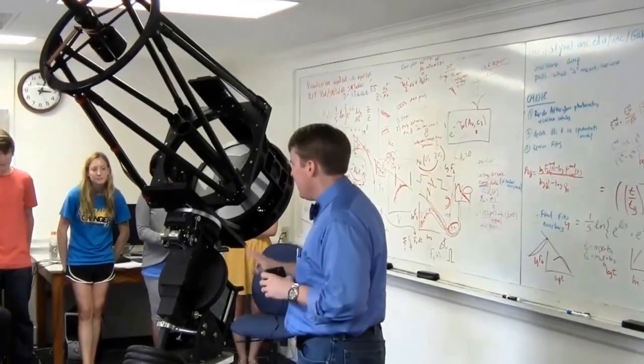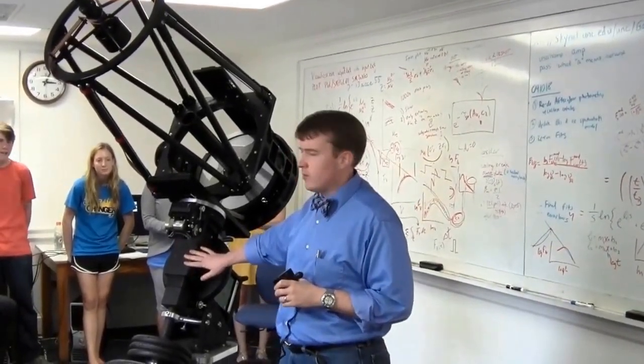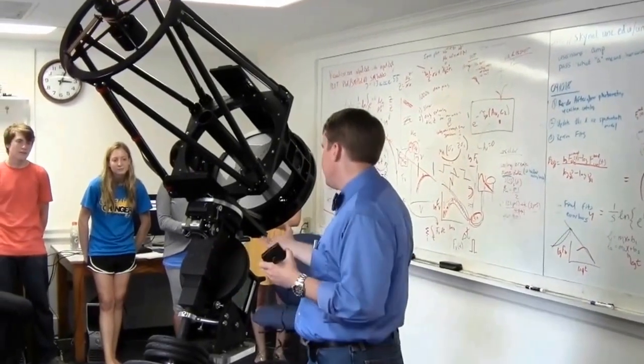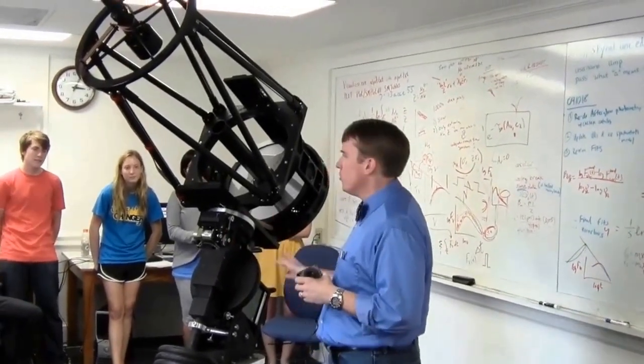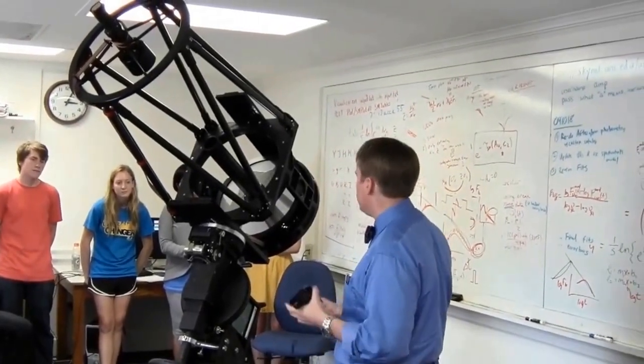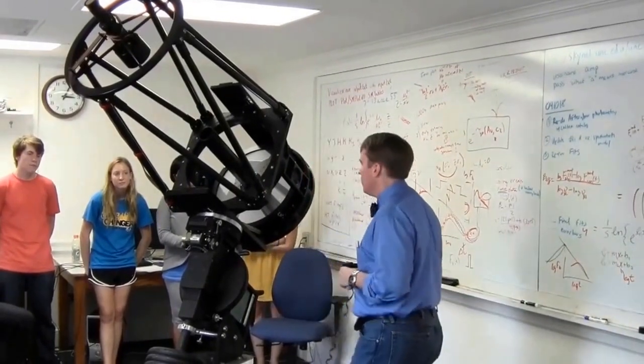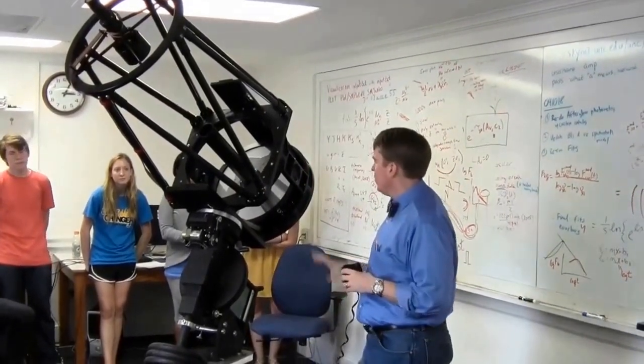This is the mount here. In the pictures of the PROMPT telescopes down in Chile, it's a red color - that doesn't really matter, that's all cosmetic. The internals are essentially exactly the same as the ones down in Chile, so this is exactly the kind of telescope you're going to be using for all the projects in this course. It's a fairly small, modest telescope with a 16-inch primary mirror.